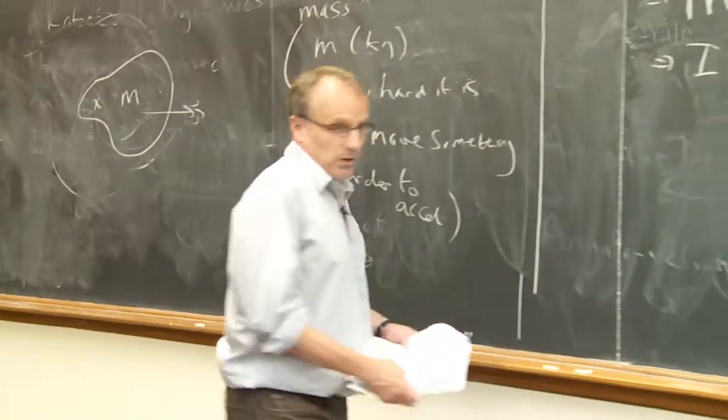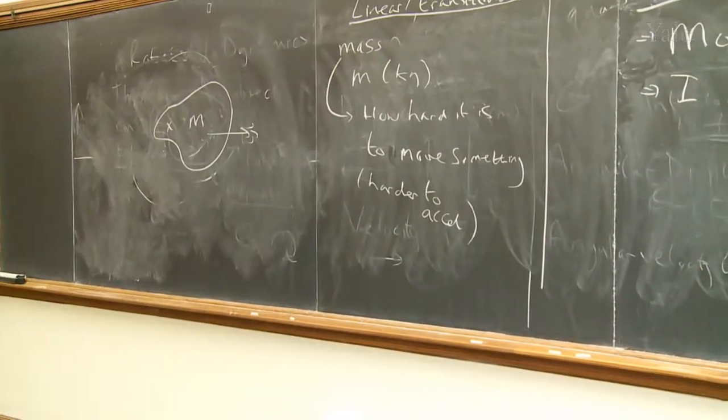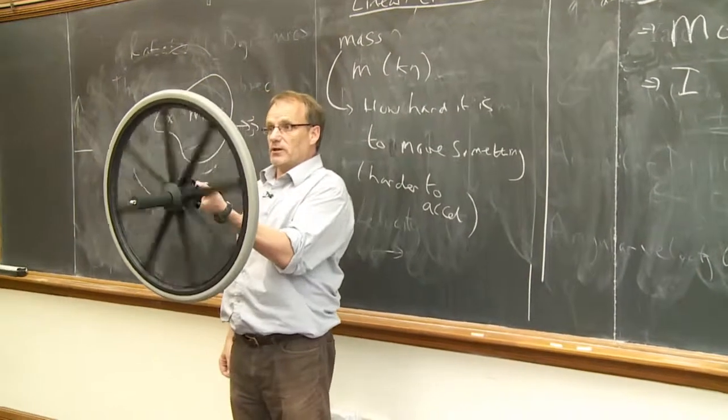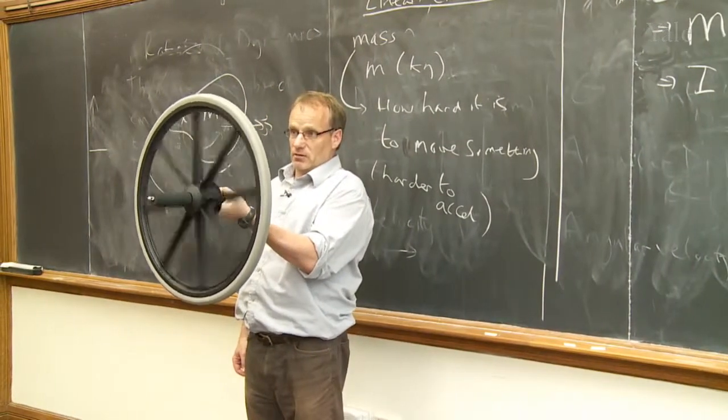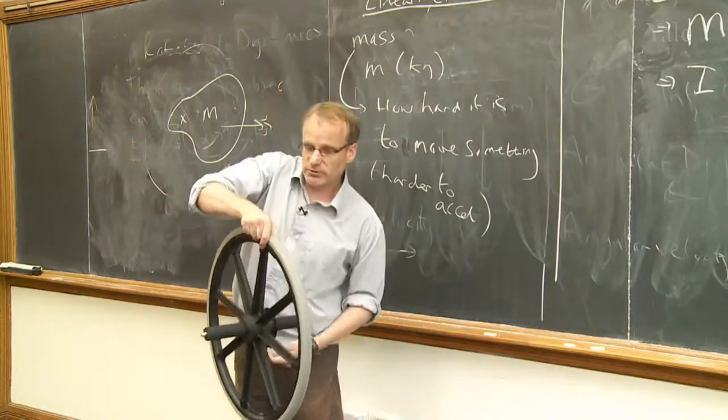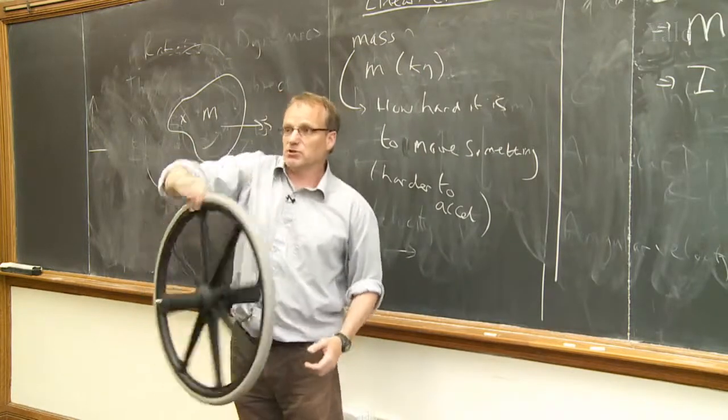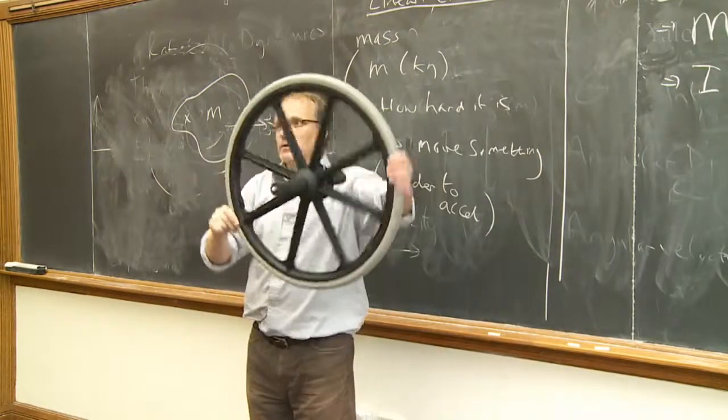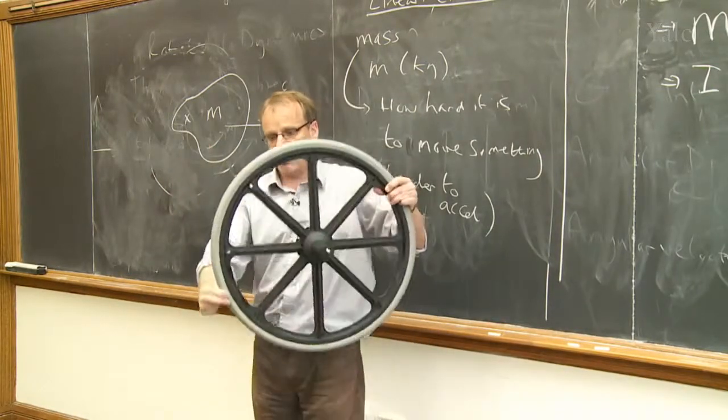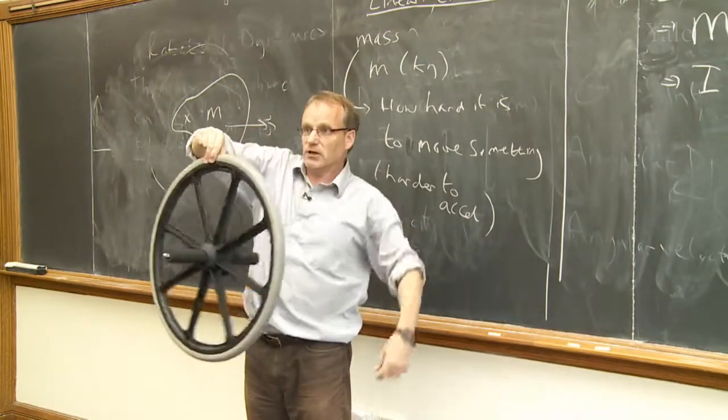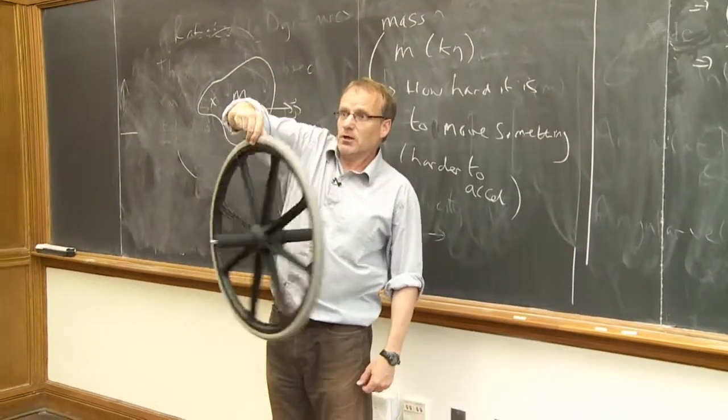So if, for example, again going back to the wheel, it's quite easy for me to rotate the wheel about this axis, about the center. But if I try to rotate it about the rim, it's a much bigger torque on my fingers because all of the wheel is moving about this point. So here's my fingers. If I hang it like that, this is the axis of rotation.